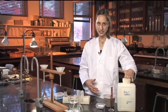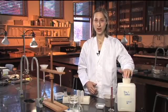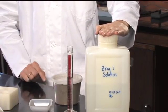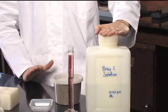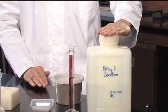So the Bray extraction is a weak solution of hydrochloric acid and ammonium fluoride. It's a good extraction for acid soils to estimate available phosphorus but for a neutral or alkaline soil there are other methods that are more appropriate.